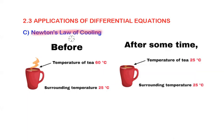What happens when a cup of hot tea with 60 degrees Celsius is left on the table where the surrounding temperature is 25 degrees Celsius? The answer is simple. It cools down gradually and reaches the temperature of the surrounding 25 degrees Celsius.